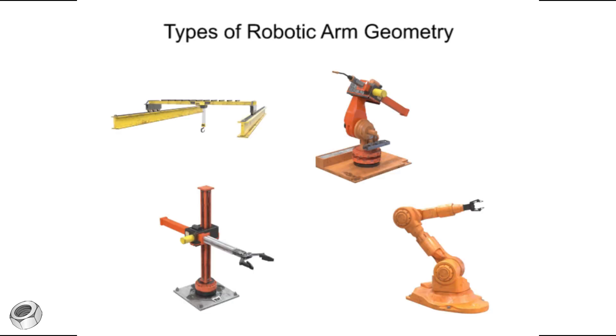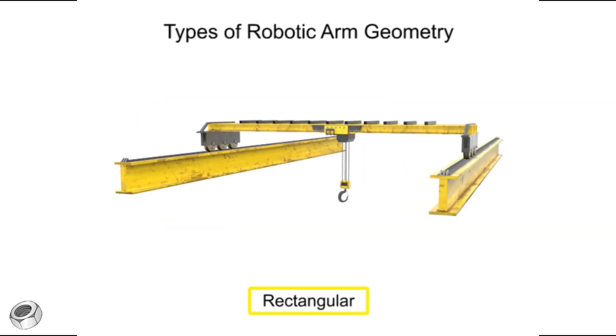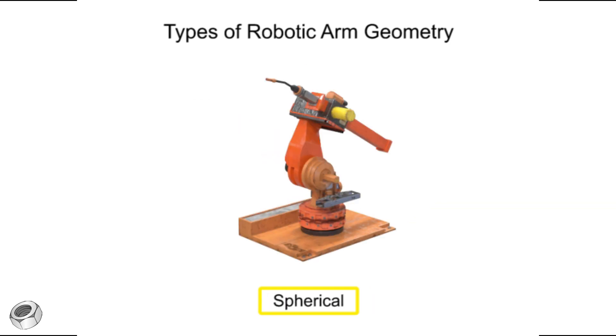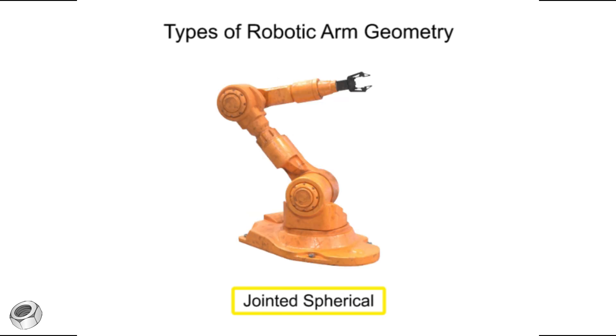There are four main types of robotic arm geometry: rectangular, cylindrical, spherical, and jointed spherical.